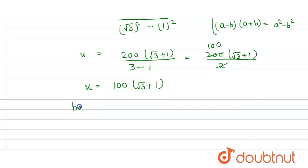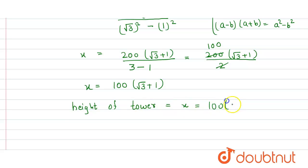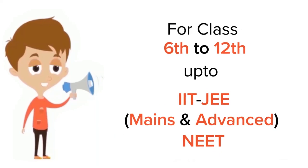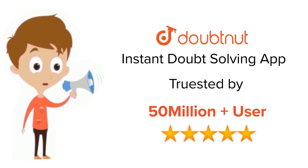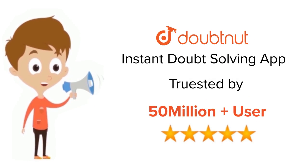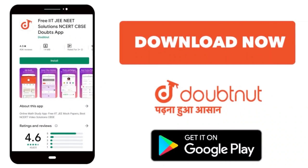So the height of the tower is equal to x = 100(√3 + 1) meters. That's our answer. For class 6 to 12, IIT JEE and NEET level, trusted by more than 5 crore students — download the Doubtnut app.